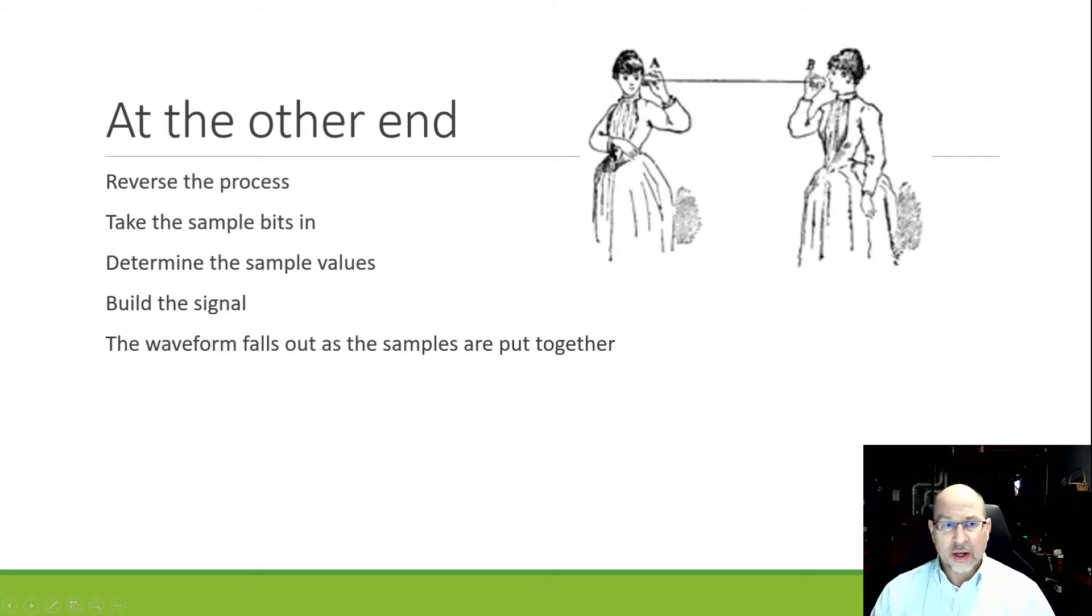What goes on at the other end? Well, of course, now you're receiving a stream of values, and that stream of values represents the quantized samples from the original sound. So you take the values, you assign them to amplitudes at a rate of 8,000 samples per second, and you end up rebuilding the original signal.